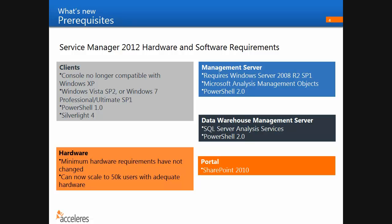Starting with hardware requirements: the minimum hardware requirements have not changed since the 2010 version. If you've got 2010 running in a current environment, you should be able to upgrade and have a performant system without changing any hardware. There have been improvements made to the performance of the product. The product can now scale up to 50,000 users, which does require additional hardware capacity — so it can now scale to 50,000 users with adequate hardware. There have also been some changes to the software prerequisites for Service Manager.